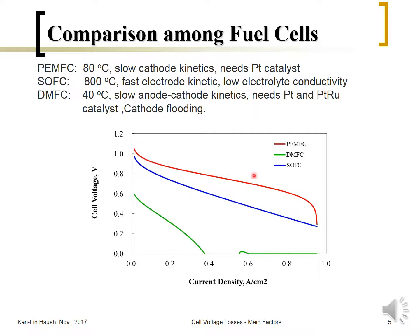Because water is generated on the cathode side in the PEM fuel cell, the water may flood the electrode and block oxygen diffusion, causing a concentration overpotential and a limiting current behavior. You get a limiting current if the electrode is flooded with liquid water, because the operating temperature is low.